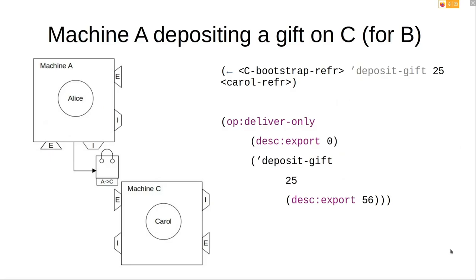The first thing that happens when machine A tries to perform the handoff to machine B is that machine A sends a message depositing in the gift table for the A-to-C session — on C's side. It's the gift table between sessions A and C. It's sent to the bootstrap object on C with method 'deposit gift', with a gift ID and the reference to Carol. On the wire this ends up being a deliver-only operation.